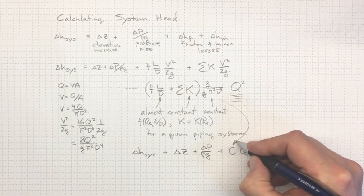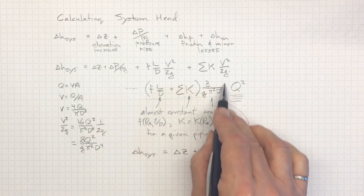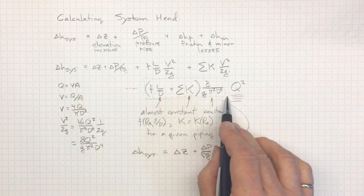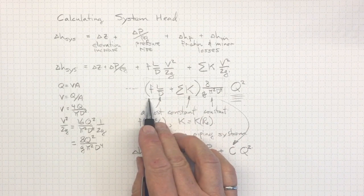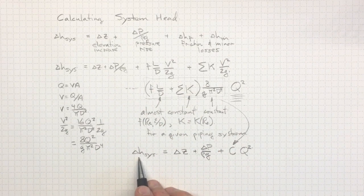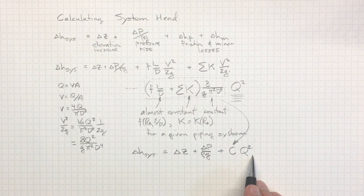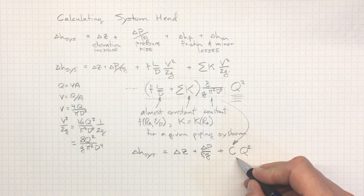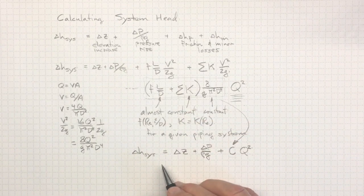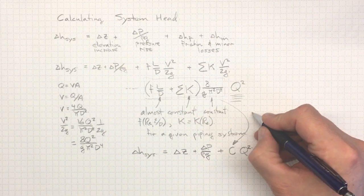And of course, that constant is coming from up there. It's this collection here. So we'll have to do our bookkeeping to figure out these values in order to use this system head relationship. This constant c, it contains a whole lot of information about system geometry.